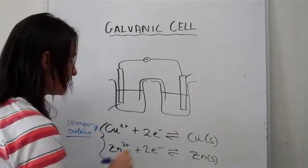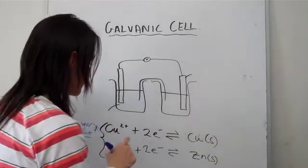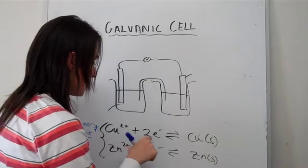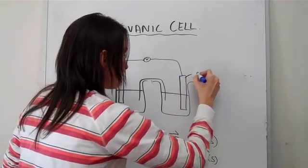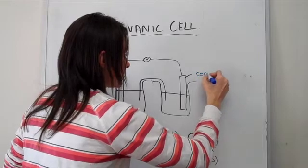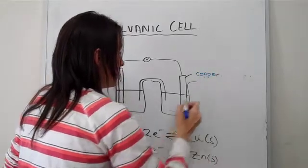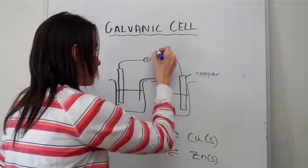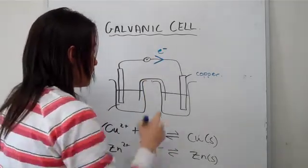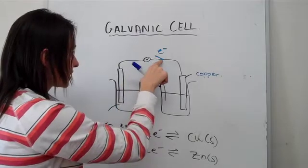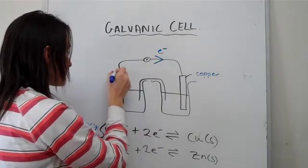Let's have a look at how we make this prediction. We know that copper is going to want to gain electrons, so let's say this electrode is copper and electrons must flow towards copper. Those electrons have to come from somewhere, so they have to come from zinc.